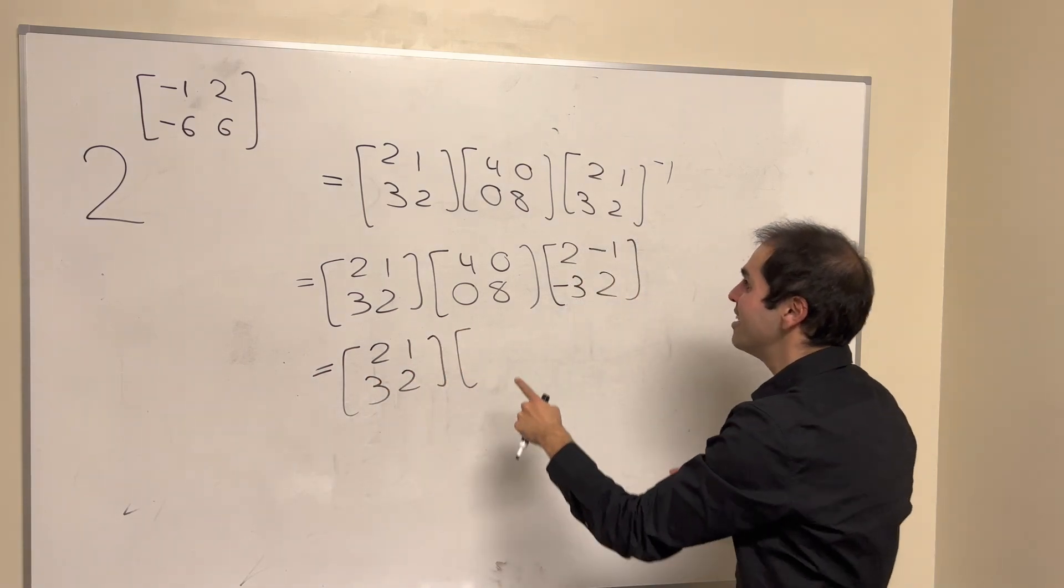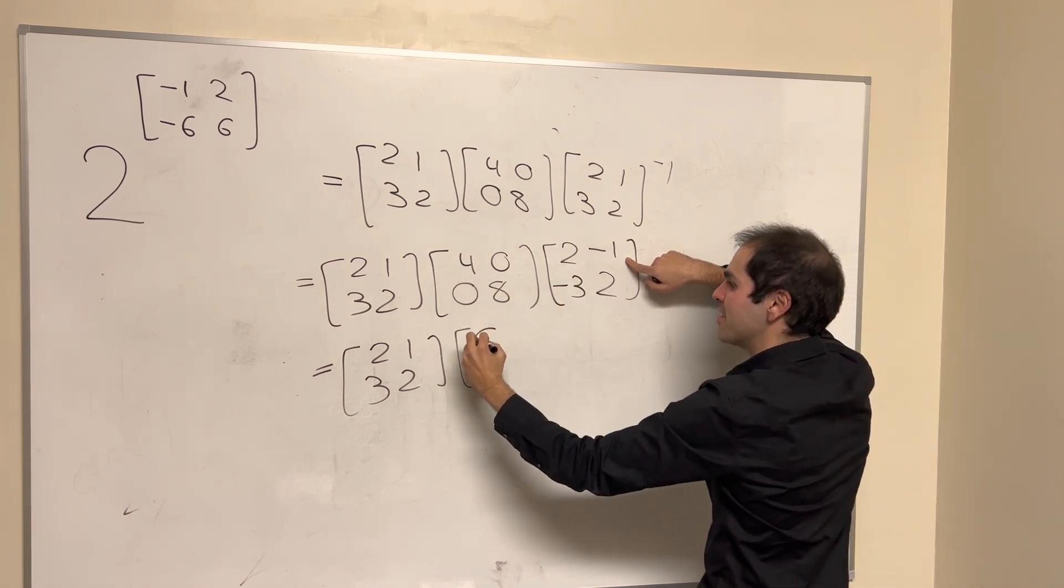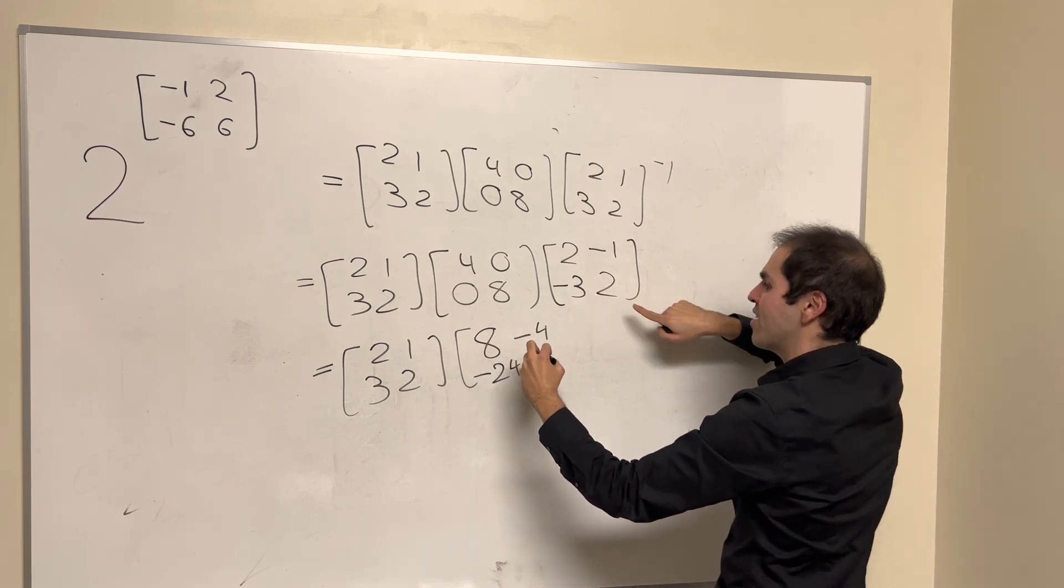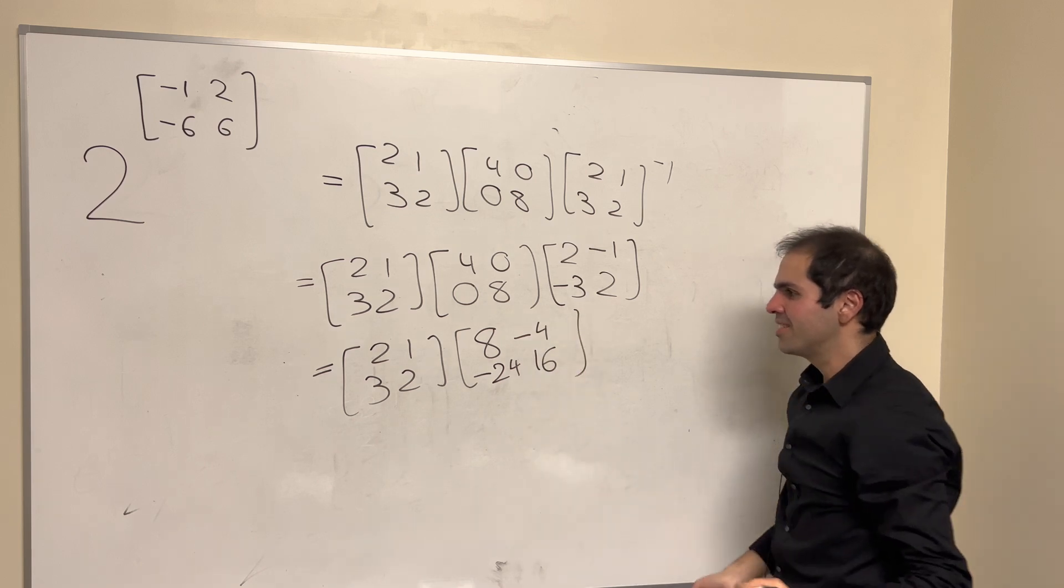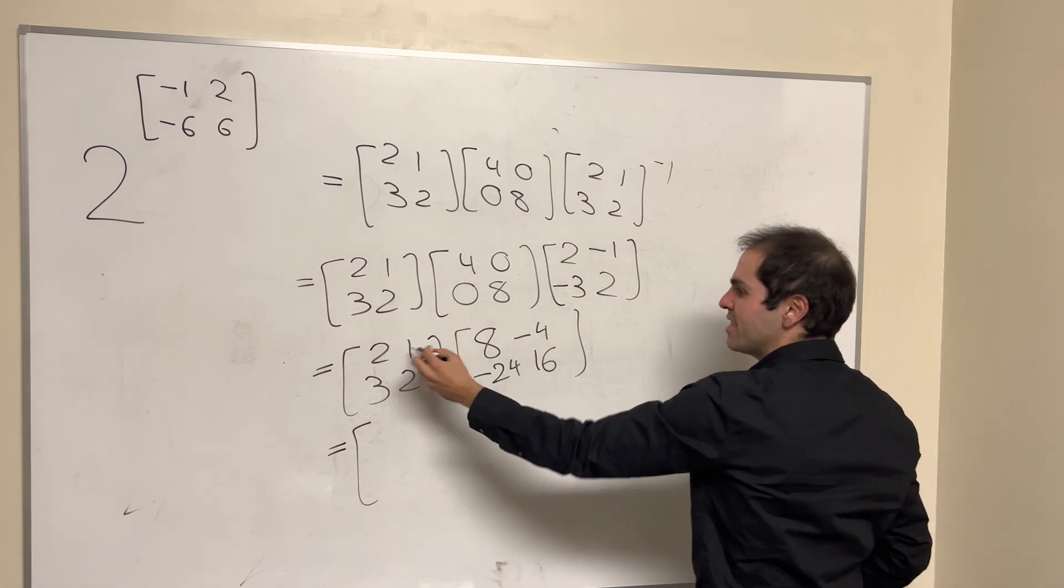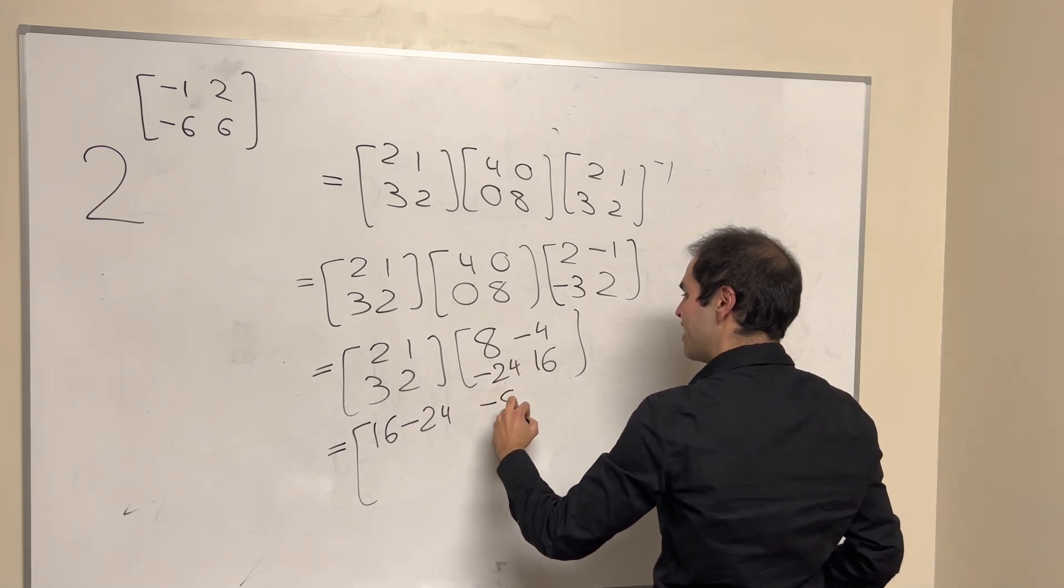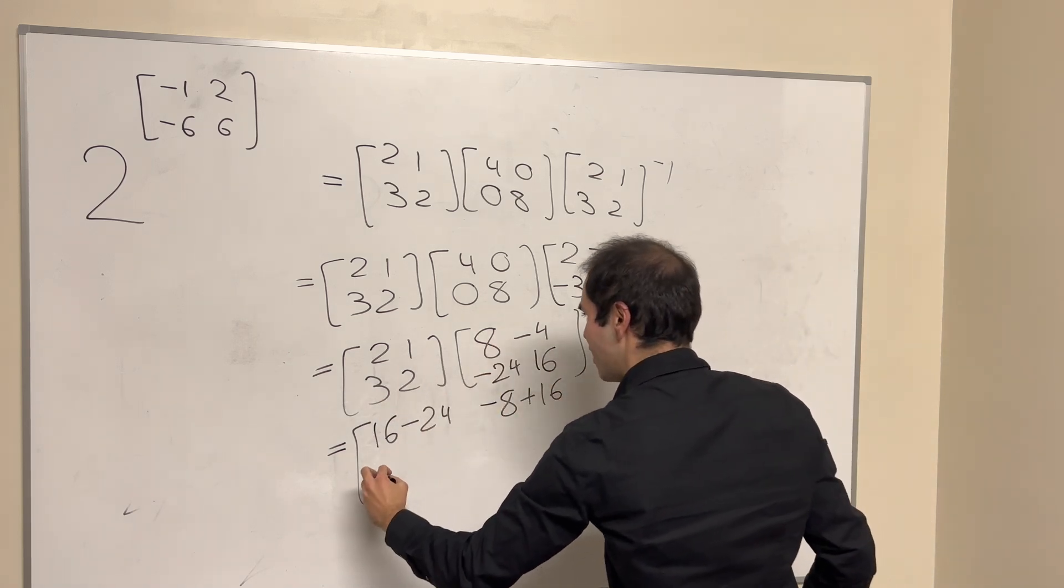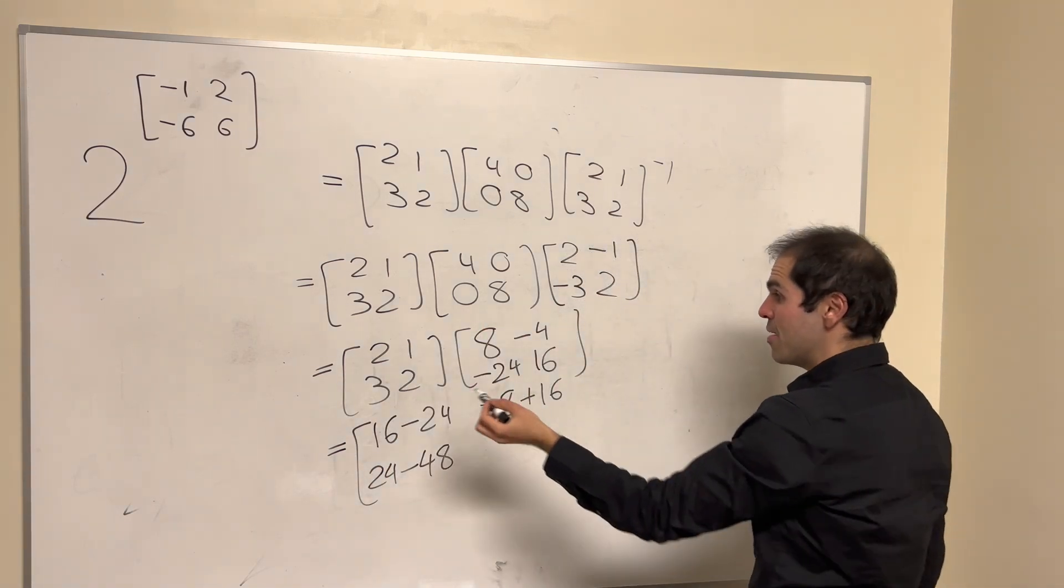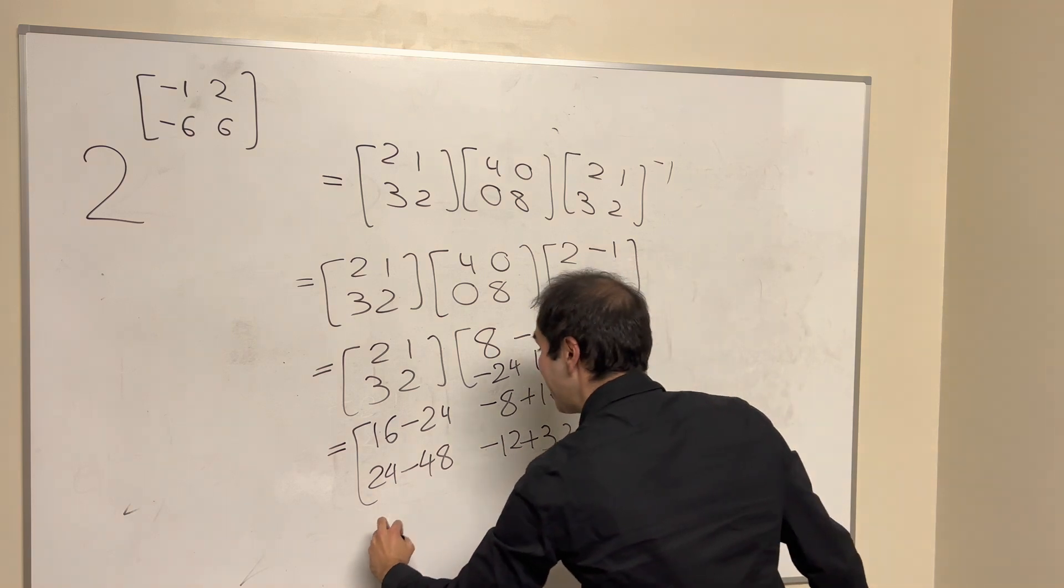And then to calculate this, again, from right to left, so first you multiply this row by 4 to get 8 minus 4. You multiply this row by 8 to get minus 24 and 16. I know, quite big numbers. And then you multiply those two matrices, so I think it's 16 minus 24, and then minus 8 plus 16, and then 24 minus 48, and last but not least, minus 12 plus 32.